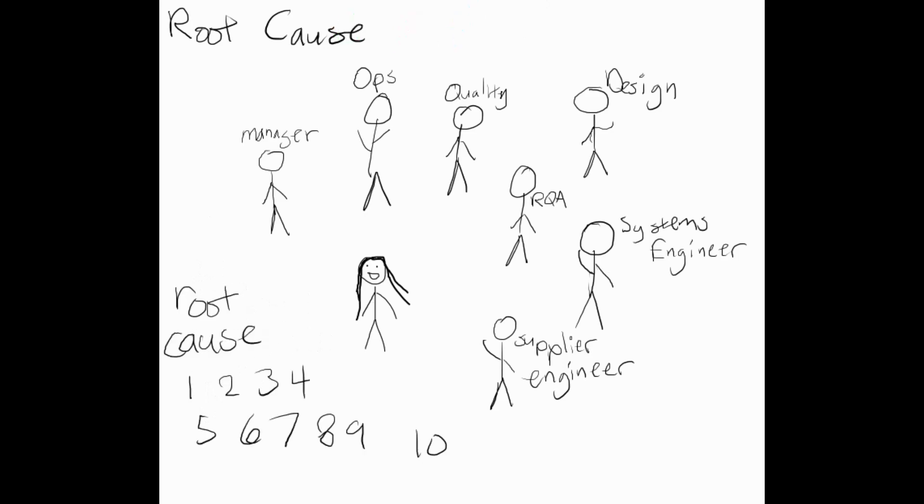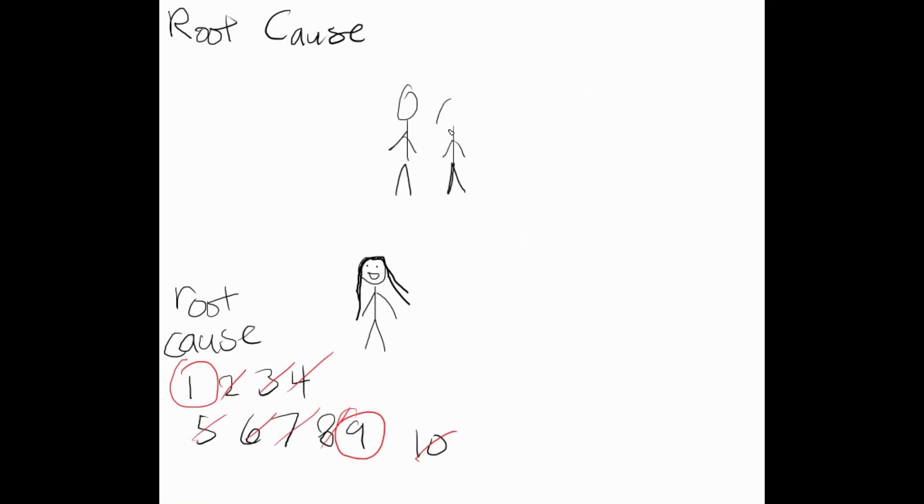Usually, for the sake of project scope, less than three root causes are selected as the leading root causes, even if a root cause discussion can highlight over 10 causes. Once the root causes are selected, the owner presents the findings to a group of managers for approval.